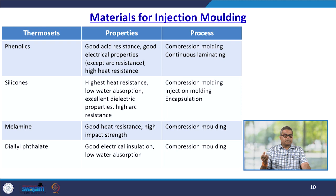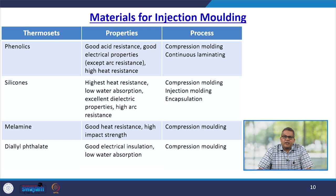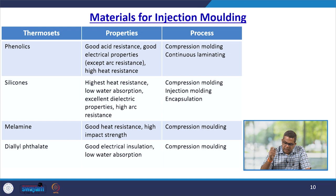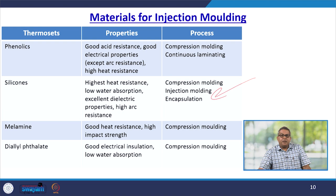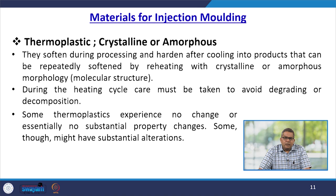Phenolics have good acid resistance, good electrical properties, and high heat resistance — they can be compression moulded and continuously laminated. Silicones have the highest heat resistance, low water absorption, and excellent dielectric properties with high arc resistance — they can be injection moulded and encapsulated. Melamine is a very common thermoset with good heat resistance and high impact strength. Diallyl phthalates also have good electrical insulation and low water absorption, and both can be compression moulded.